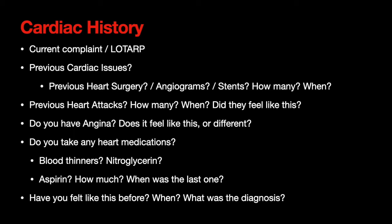If someone has a cardiac history, do they take any blood thinners? Do they take nitroglycerin? Do they have a prescription for nitroglycerin? If they do, how often do they use it — every day, every week? Did they use it today and it didn't do what it normally does? Do they take daily aspirin? How much and when was their last one? If you're going down a cardiac chest pain pathway, establishing their aspirin use can be really important in determining how much aspirin you're able to give them.